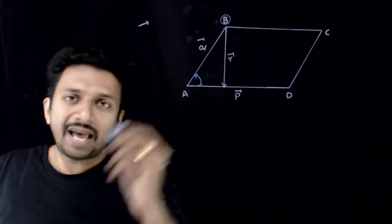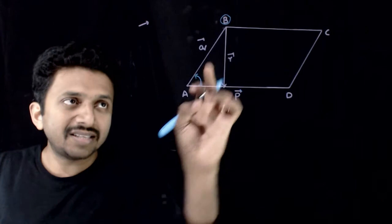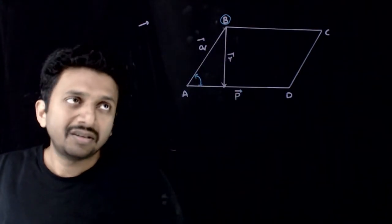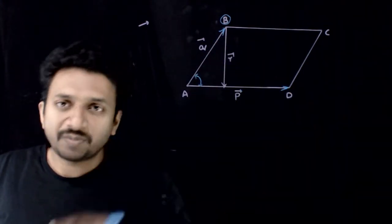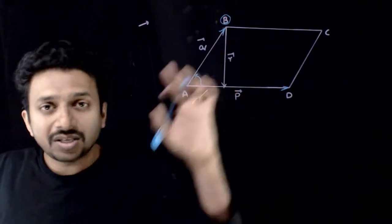This angle is given as an acute angle. So if this angle is acute, the diagram will be formed like this. This vector is Q bar, this vector is P bar. If that is so, what is the vector R bar?